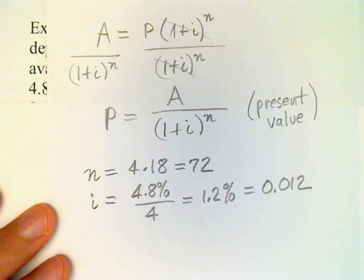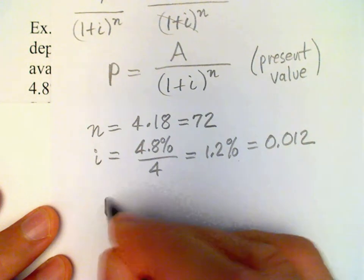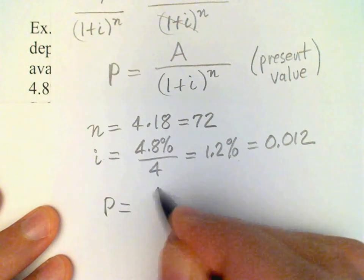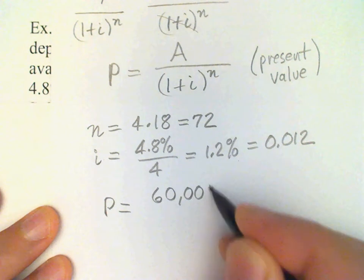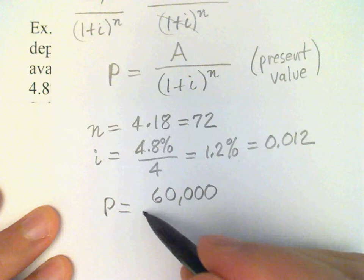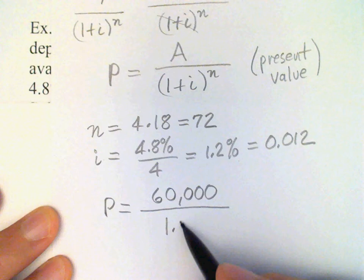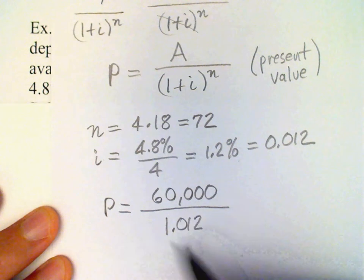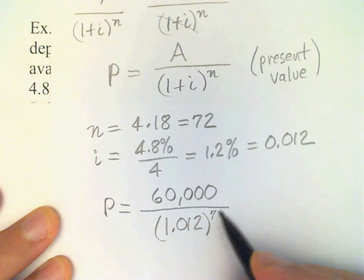Now all we have to do is substitute into our formula. P is equal to 60,000, that's the desired future value, divided by 1.012 raised to the 72nd power.